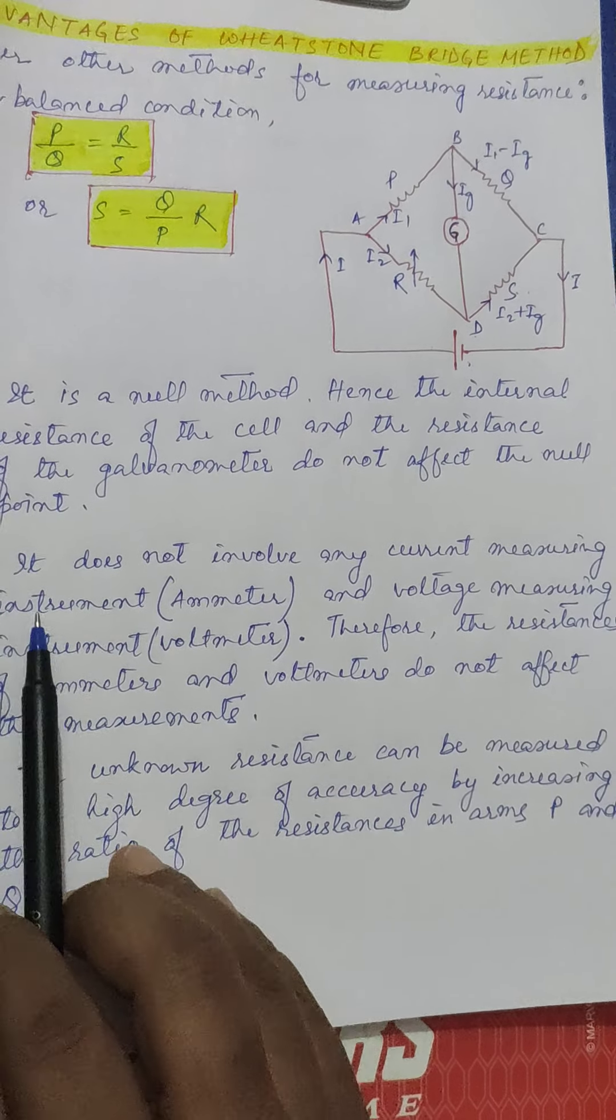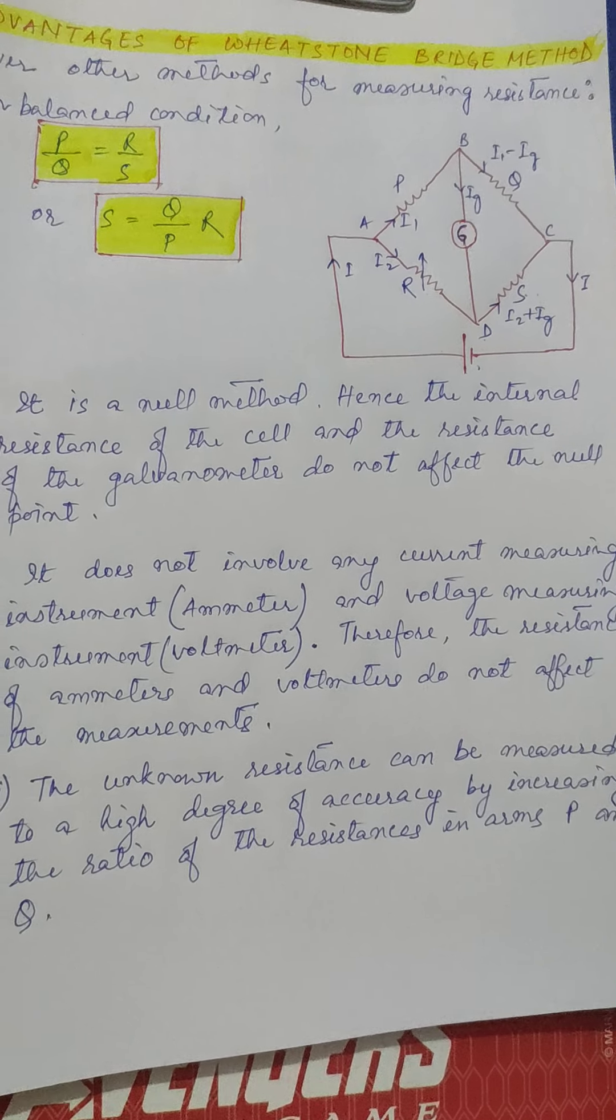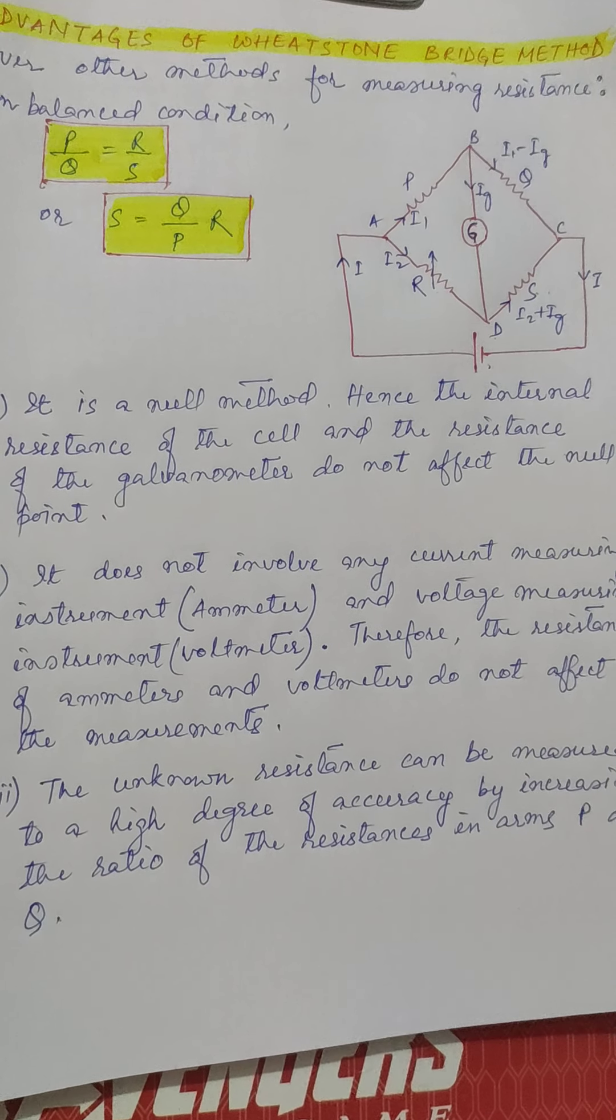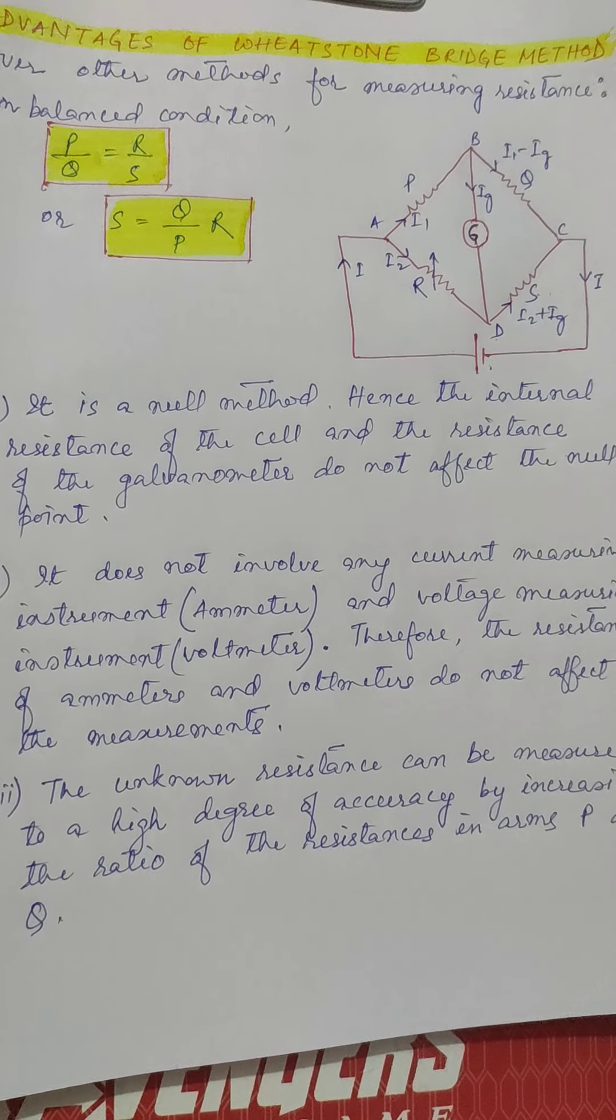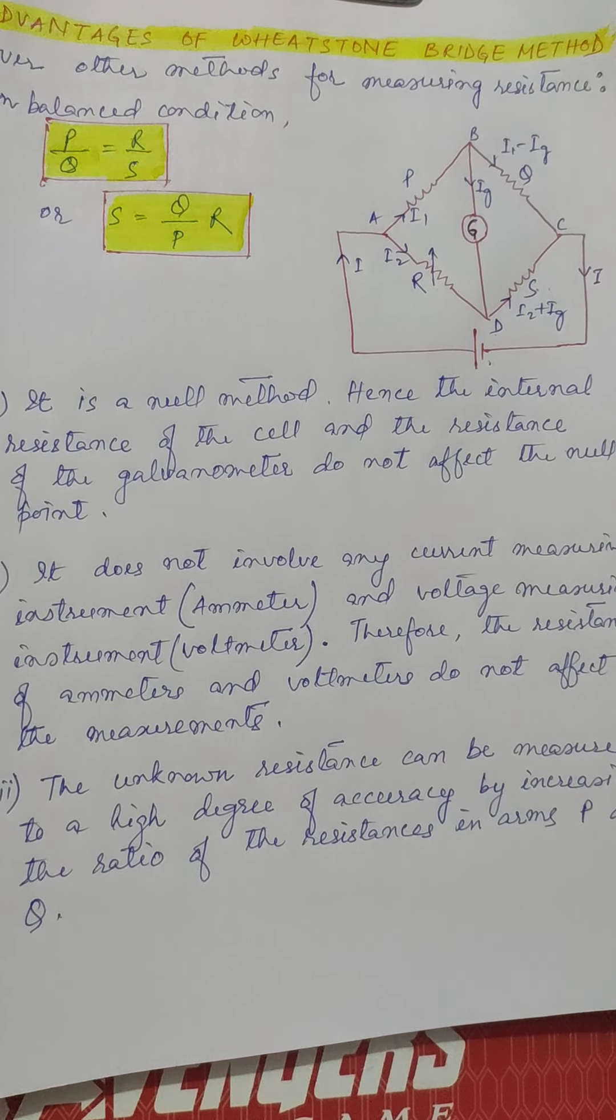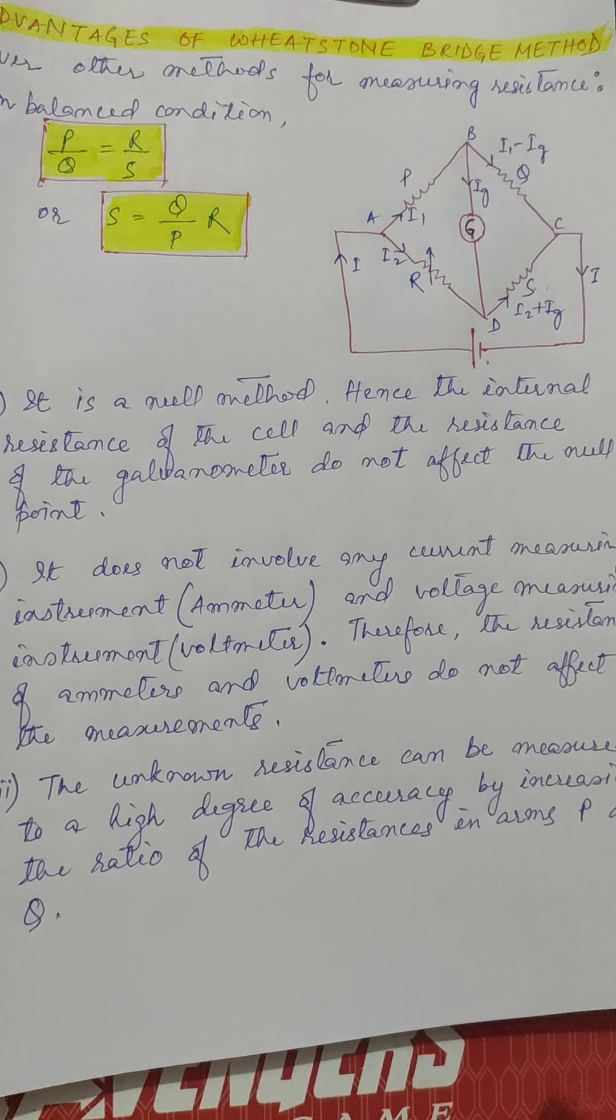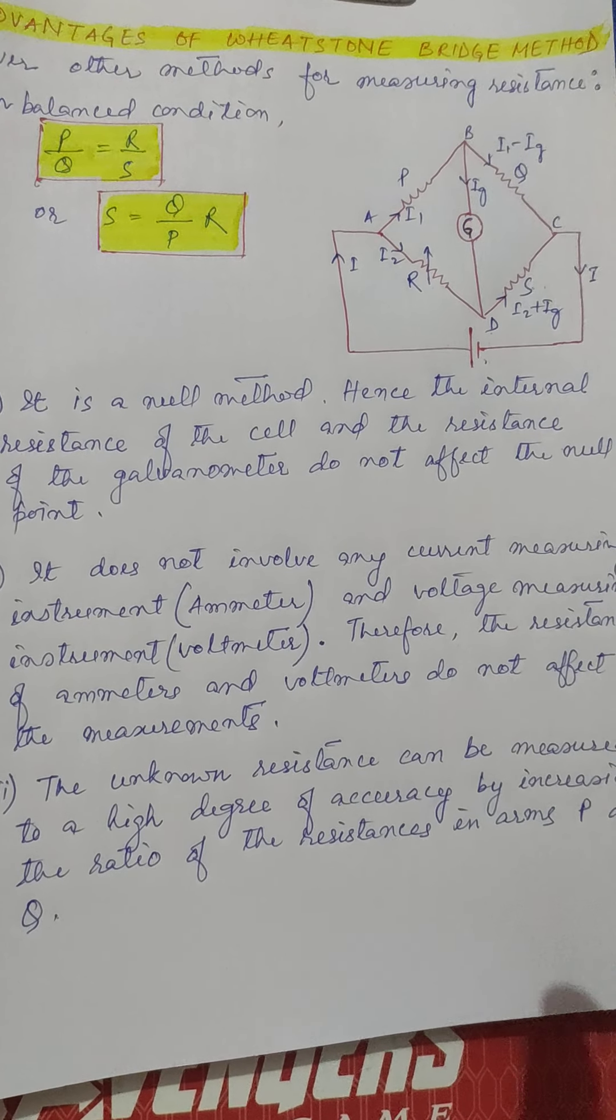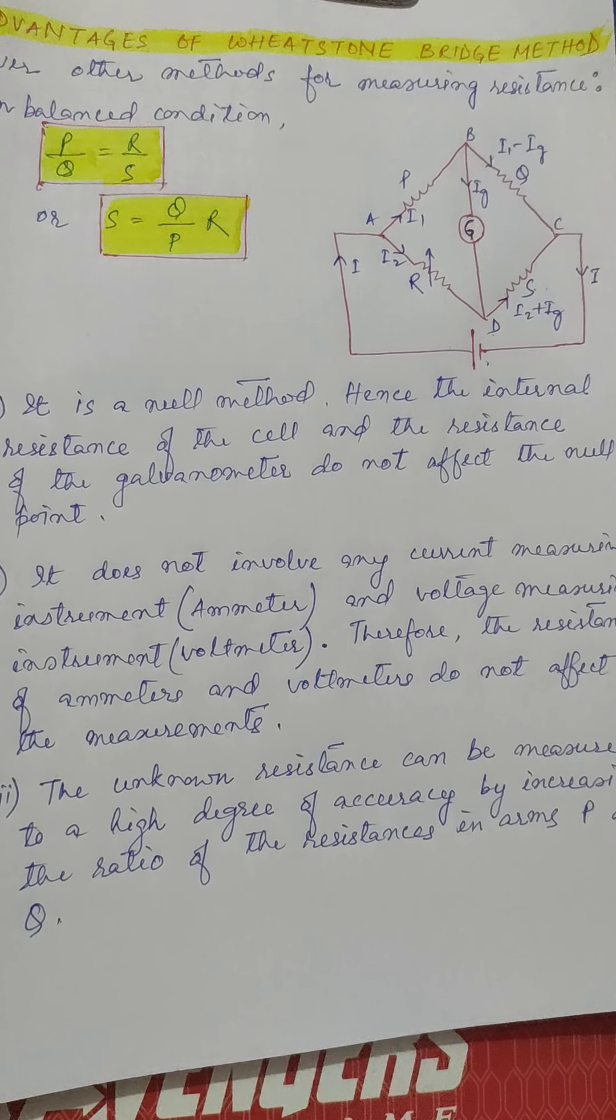Now again, when we measure the resistance of a given conductor, we have to either use a voltmeter if the current is known and then we can measure the resistance, or we have to use an ammeter where if the voltage is known, then we can measure the resistance.